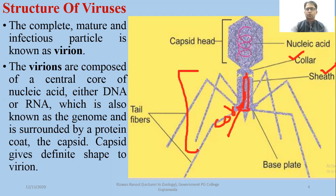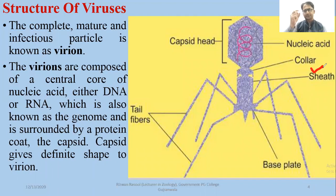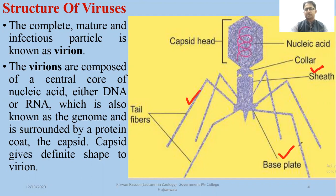This is the core protein. Remember that the sheath, after contractile protein and contraction, will help in the injection of the viral DNA into the host cell. Tail fibers will help in the landing, and the base plate is used during attachment.